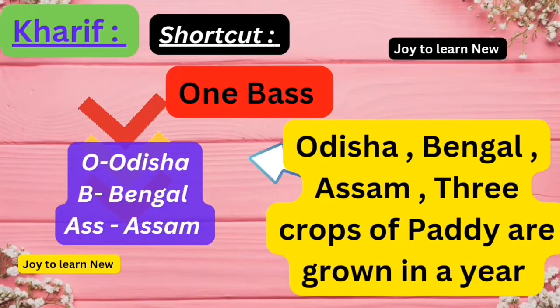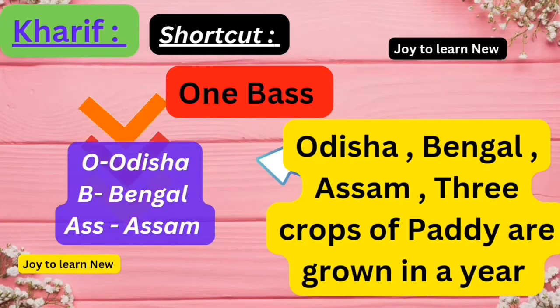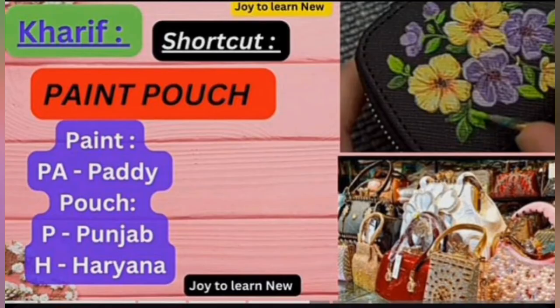The next shortcut is '1 boss' — O refers to Odisha, B to Bengal, and Ass to Assam. Then the shortcut 'Paint Pouch' — in Paint, PA represents paddy. In Pouch, P stands for Punjab and H stands for Haryana. So paddy is an important crop in Punjab and Haryana.